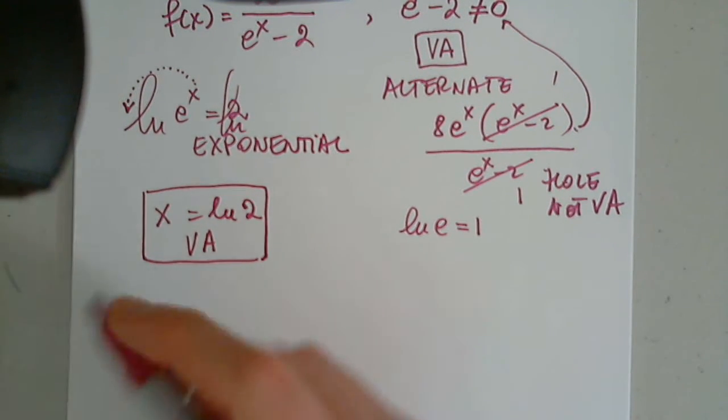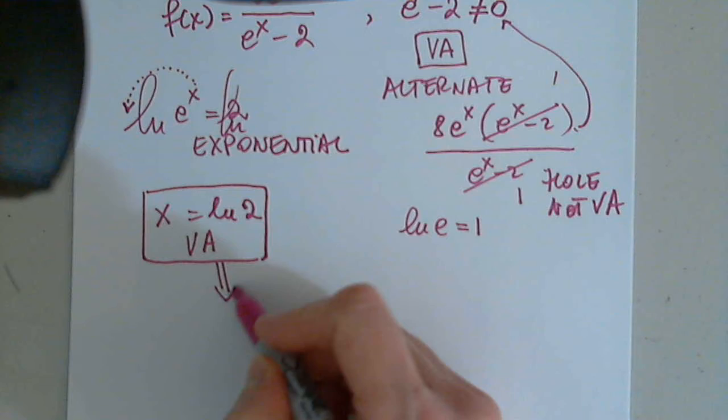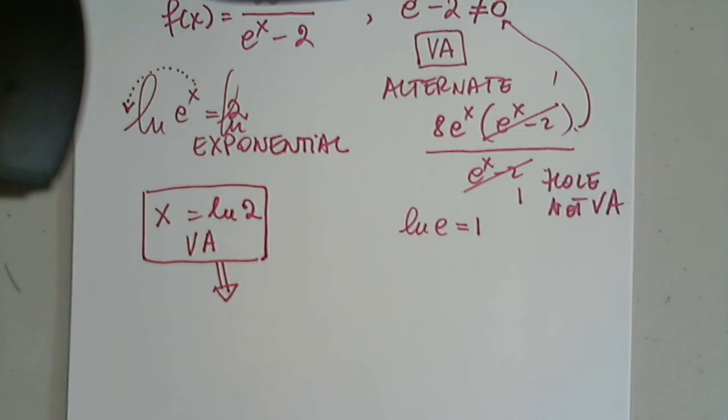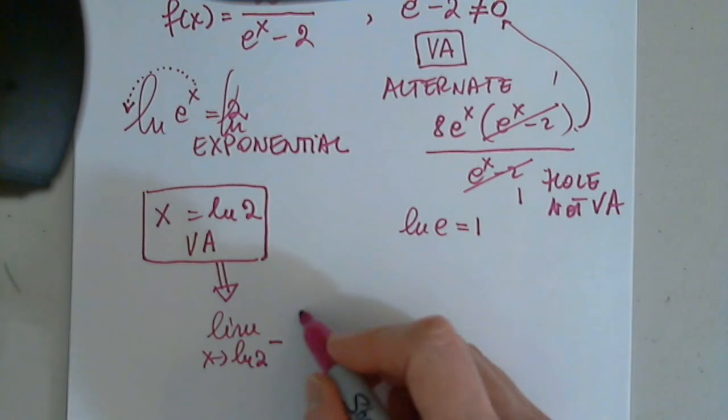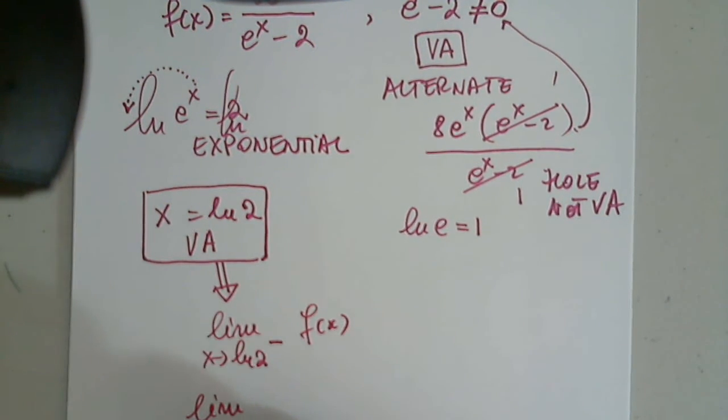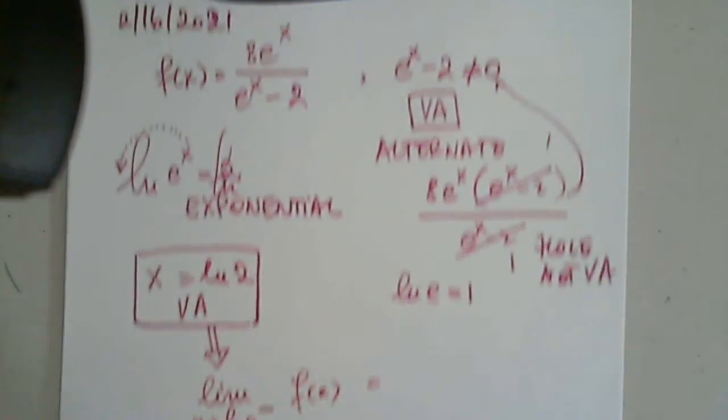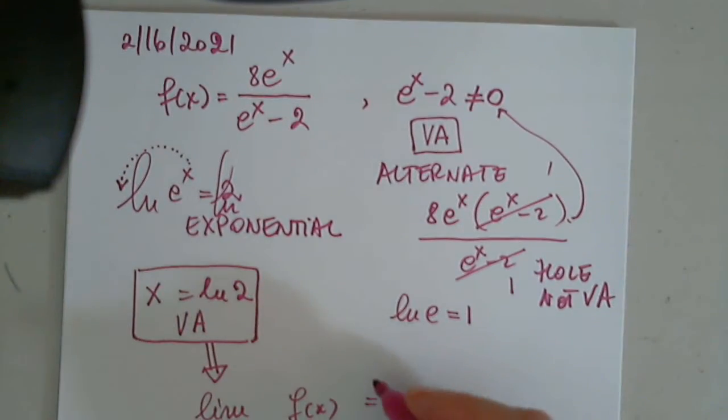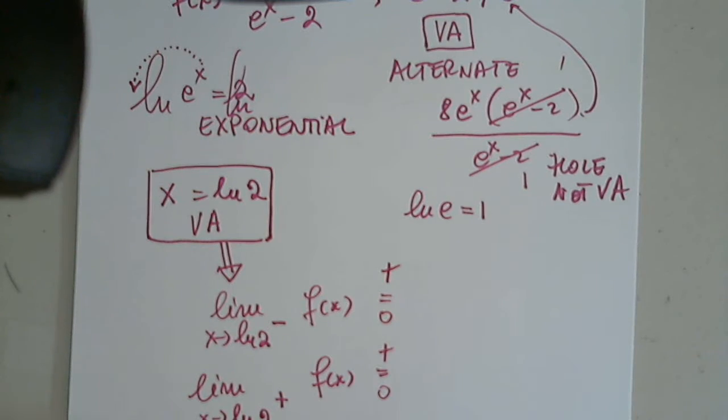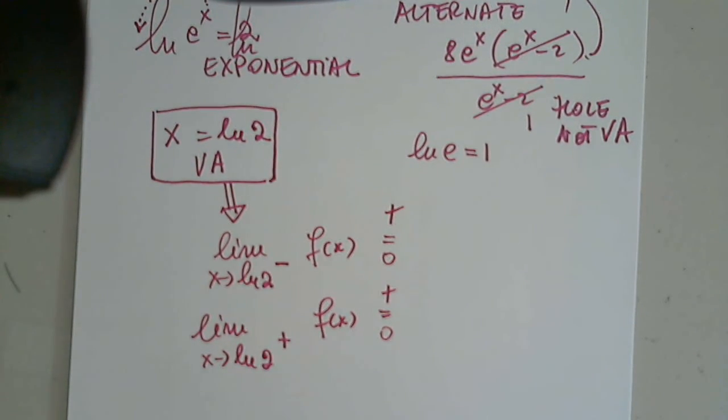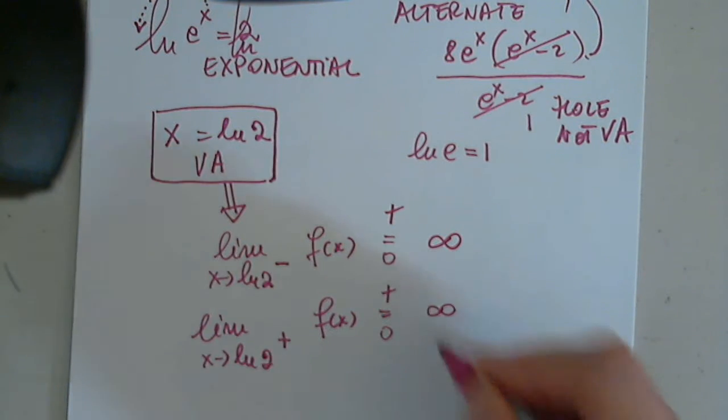If I'm asked to find the limits left and right, and I will always ask you to do that, not just to find the vertical asymptote, you will also have to determine the limit as x approaches natural log 2 from the left of the function and from the right of the function. So the numerator is always a positive number. The denominator, however, is zero. So we have to determine the sign of the infinity.